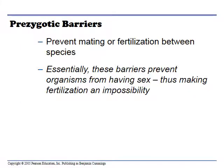Prezygotic barriers prevent mating or fertilization between species — there's no opportunity to mate. Some are physical, where certain insects have very specialized sex organs so fertilization is impossible. You can also have timing barriers where some pollen is released in fall and some in spring, preventing fertilization and crossbreeding.